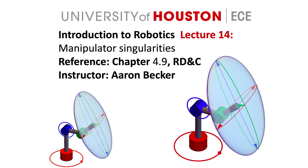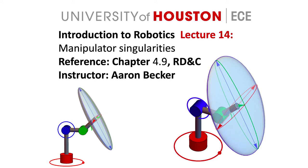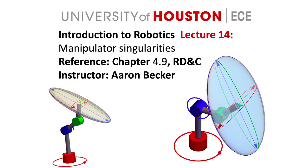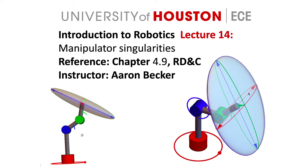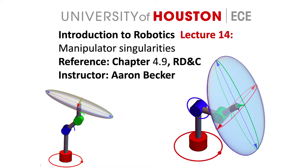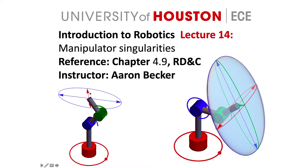In lecture 14 we're going to start talking about manipulator singularities. These are parts of the robot's workspace where the reachable set of velocities we can achieve loses dimension. You can see the picture on the right — that ellipse is the span of possible velocities the end effector can move in at that point. It's a 3D ellipse, but at certain configurations it goes from 3D into 2D or even 1D. Those are the singularities.